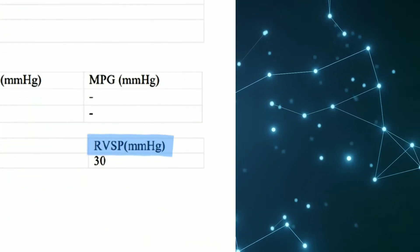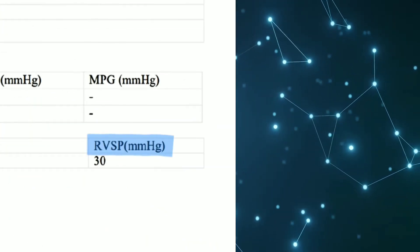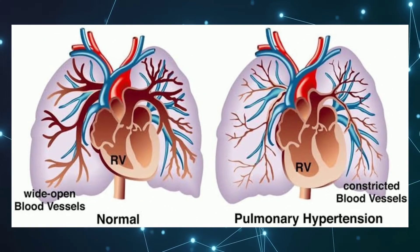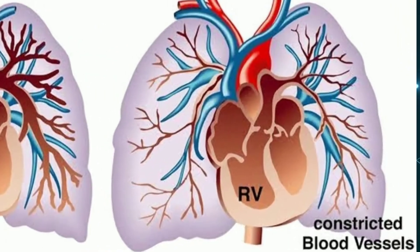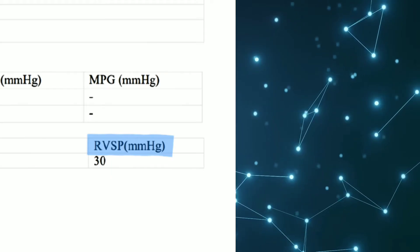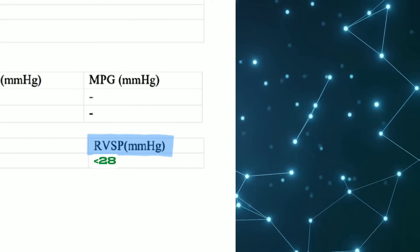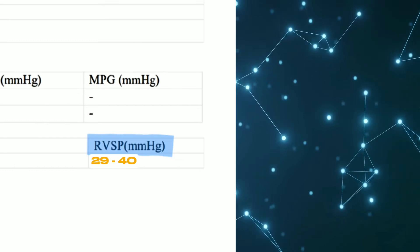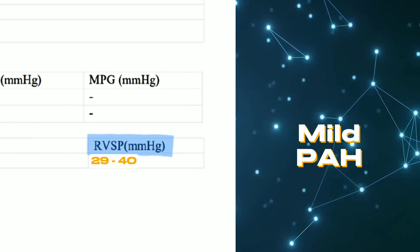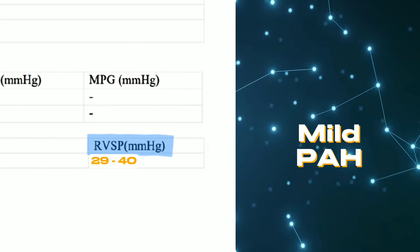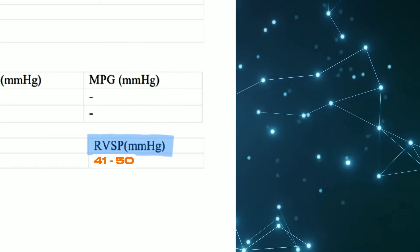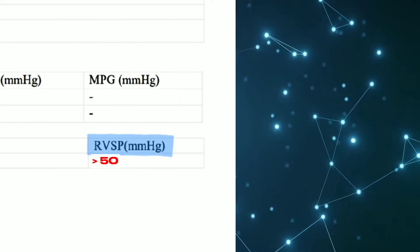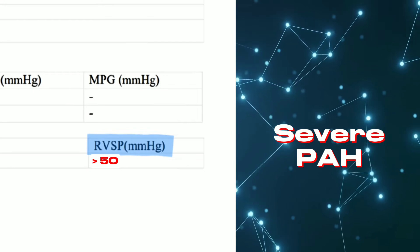Next is RVSP — right ventricular systolic pressure. RVSP helps to assess the pulmonary artery pressure, or pulmonary artery hypertension. RVSP less than 28 is considered normal pulmonary artery pressure. RVSP between 29 to 40 is considered mild pulmonary artery hypertension. RVSP between 41 to 50 is considered moderate pulmonary artery hypertension. And RVSP more than 50 is considered severe pulmonary artery hypertension.